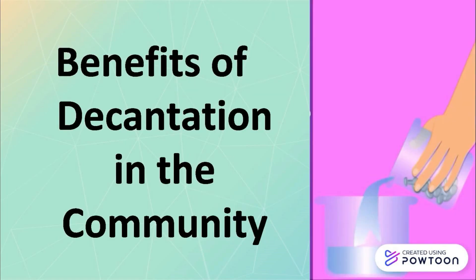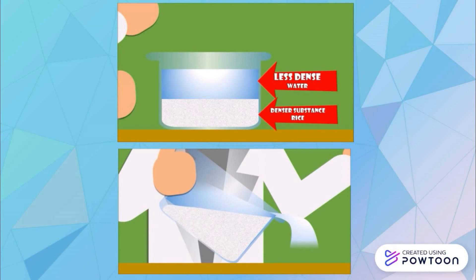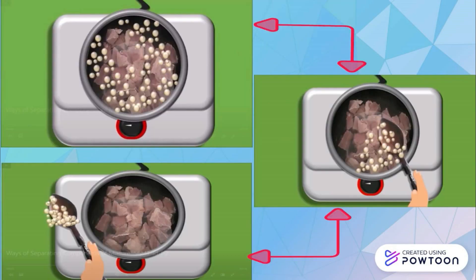Benefits of decantation in the community. We have learned that decantation is used to separate a less dense substance from a denser one. It is applicable when you want to separate rice from water by pouring the liquid out while the rice grains remain in the cooking pot. It can also be used to remove fats floating on meat by scooping them off.